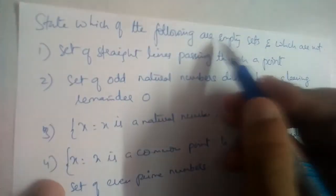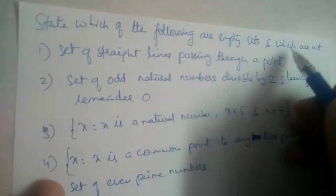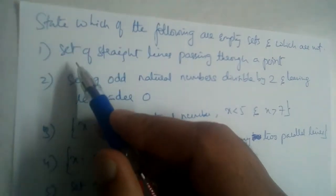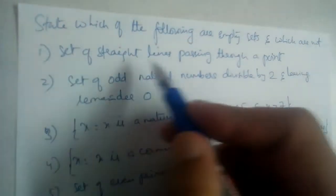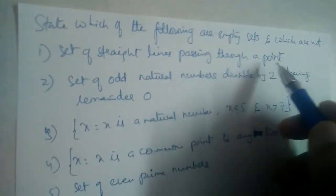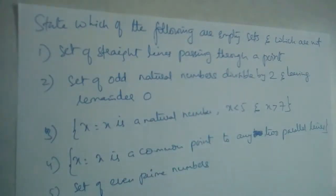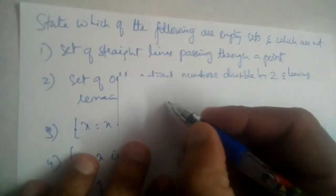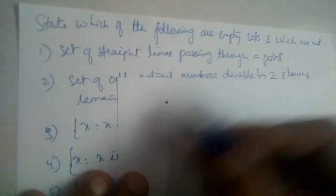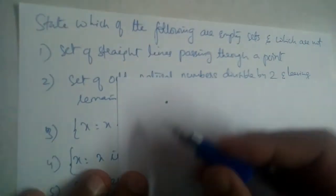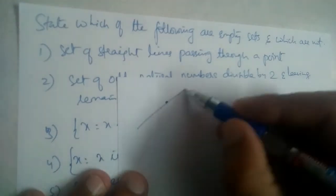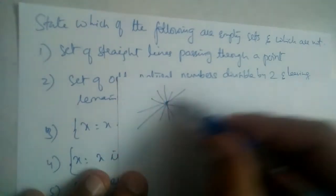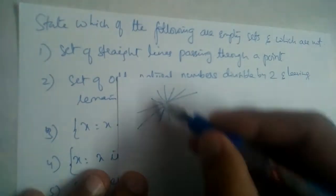State which of the following are empty sets and which are not. First one: set of straight lines passing through a point. We have a point, and how many straight lines will pass through this point? We will have infinite lines passing through a single point.